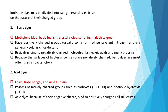The second class is acid dyes. Examples include eosin, rose, and acid fuchsin. These have negatively charged groups such as carboxyls and phenolic hydroxyls. Because of their negative charge, acid dyes bind to positively charged molecules and negatively charged cell structures.